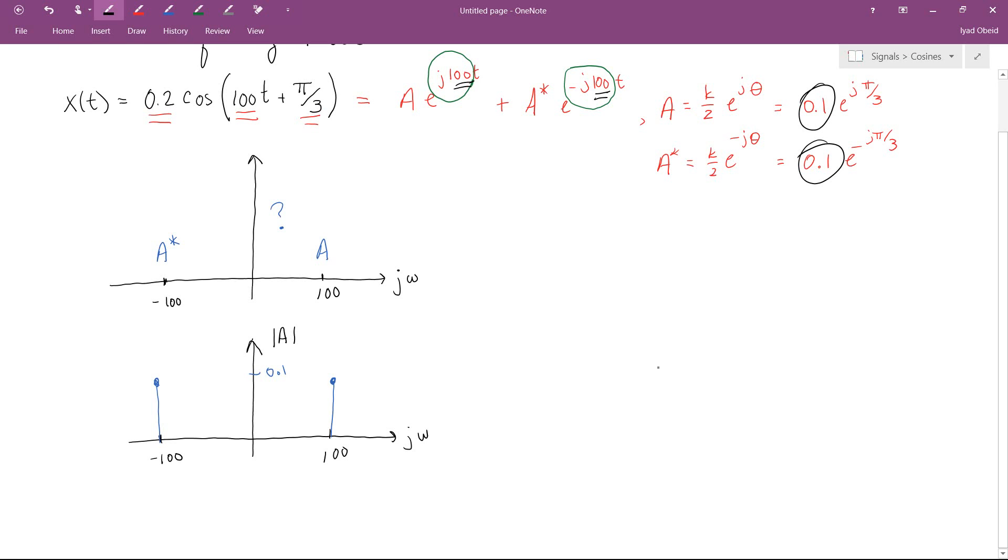Now, we also have to do separately a phase plot. We cannot do just one or just the other, right? We need to actually draw both plots in order to get all the information. So here's the phase angle of A.